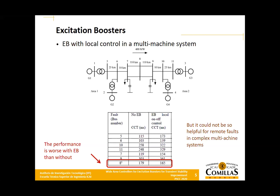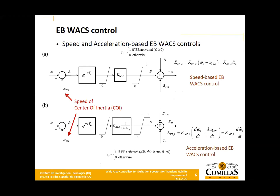However, for a remote fault — in this case at the midpoint of the two-area test system developed by Kundur — adding an excitation booster to all generators results in worse performance, lower critical clearing angle than without the excitation booster. Having learned of this phenomenon, we proposed a wide area control system based on either speed or acceleration, where the input signal is the speed deviation of the generator with respect to the center of inertia.